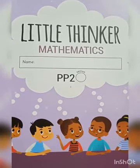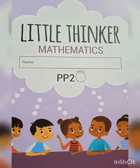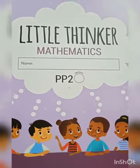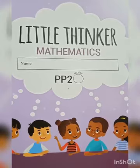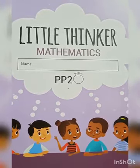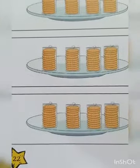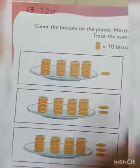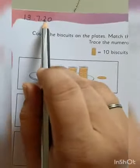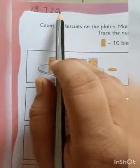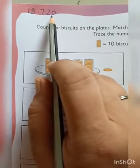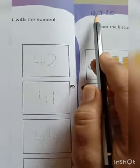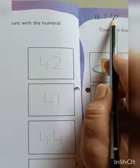Now it's time to learn how to count and write numbers 41 to 50. For that, you will open your Little Thinker math book and open page number 2 to 22. After opening the page, in the left side corner you will write today's date, 13.7.20, and on the next page also write the date.